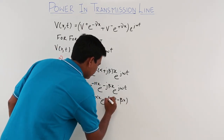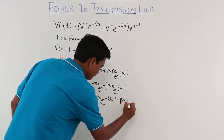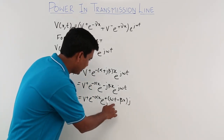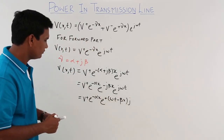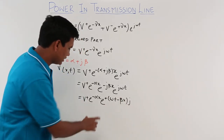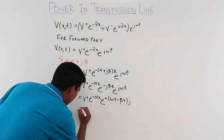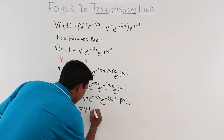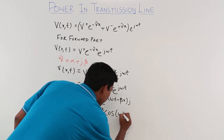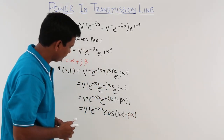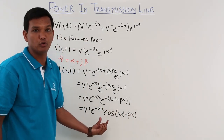Since e^(jθ) can be written in terms of cosine, this equation becomes v(x,t) = V+ e^(-αx) cos(ωt - βx). This is the instantaneous value of the voltage which is travelling forward.